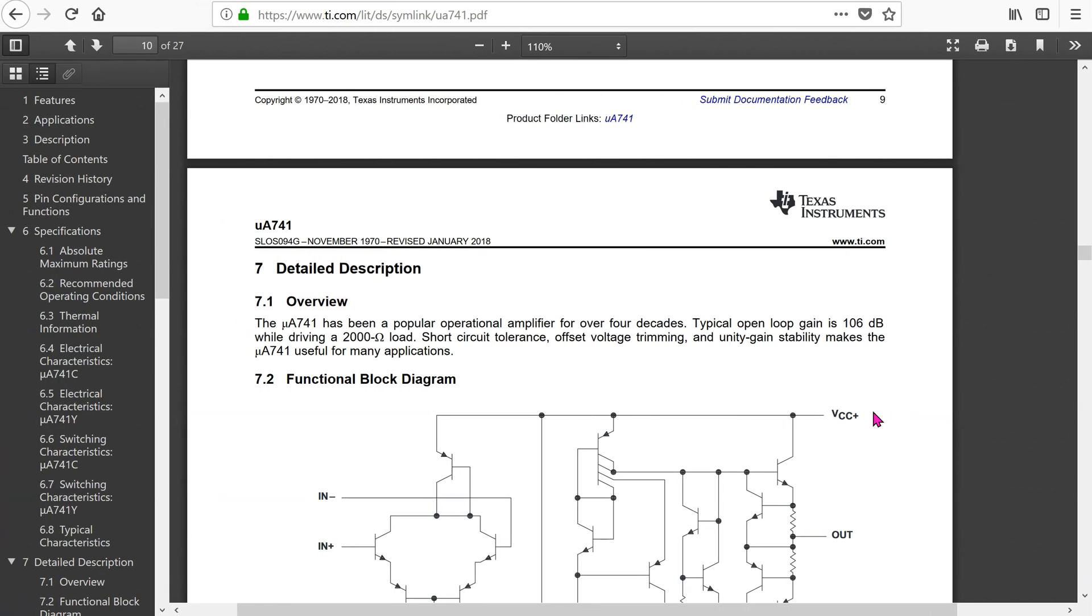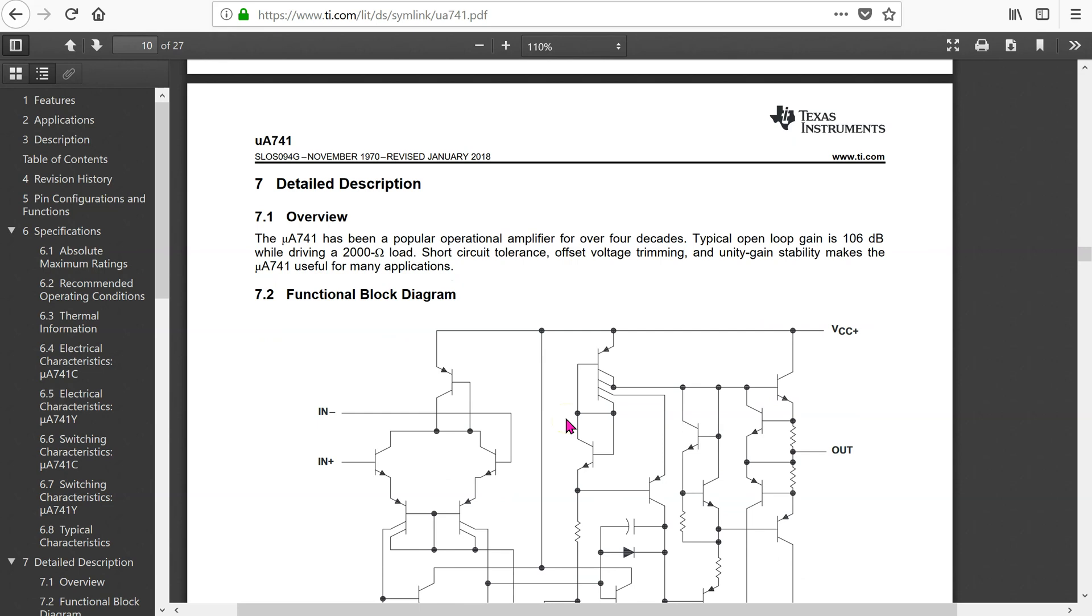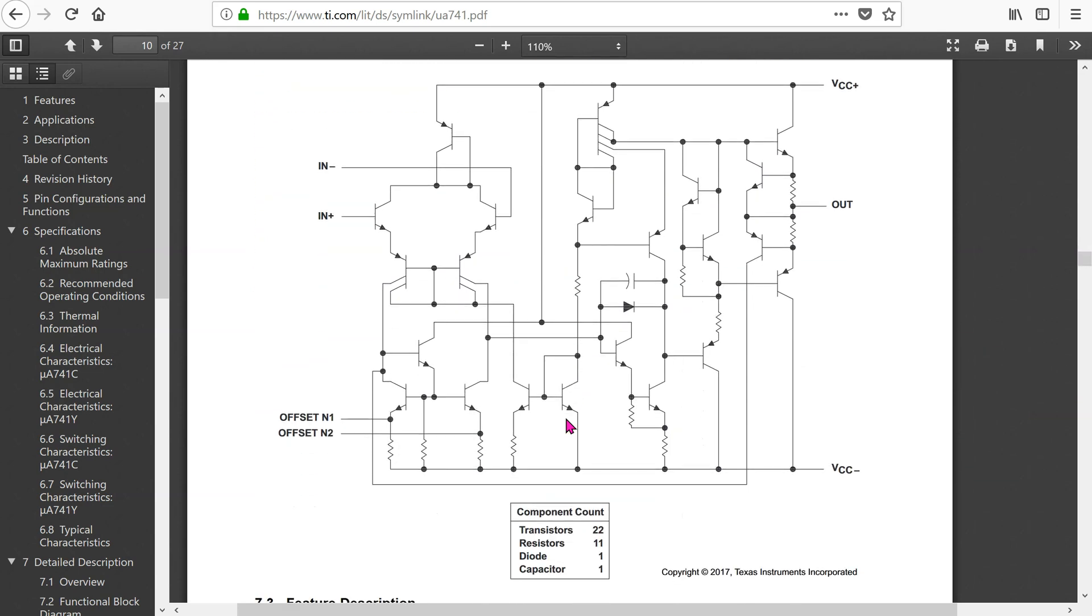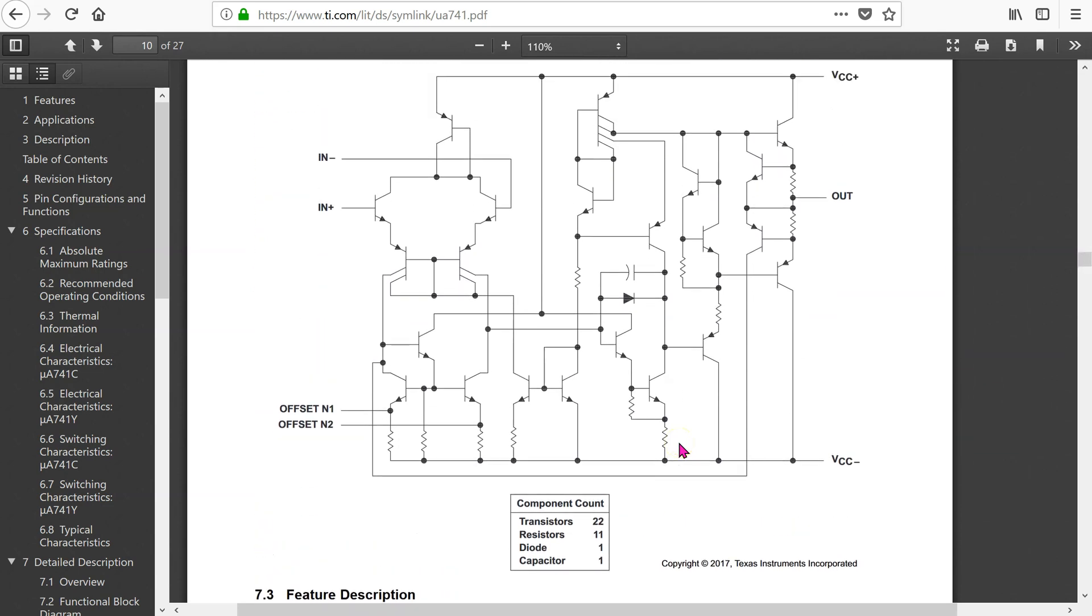For the op-amp, we will consider the popular 741 model. The datasheet for the 741 op-amp is readily available online. This figure in the datasheet shows that the op-amp comprises 22 BJTs, 11 resistors, 1 diode and 1 capacitor.